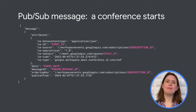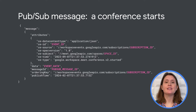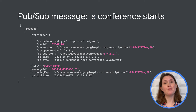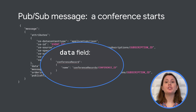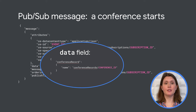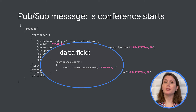Here's a Pub/Sub message that contains an event about a conference starting. The message contains standardized Cloud Event attributes, including the event type, the subscription the event came from, the time it occurred, and much more. The Pub/Sub message also includes a data field, which contains the event payload about the conference record resource that was created when the conference started. Your app can use this data to get more information about the resource that changed and respond accordingly.